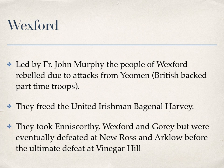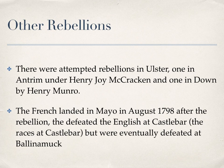The Wexford rebels were eventually defeated at Enniscorthy and New Ross before the ultimate defeat at Vinegar Hill. There were also two attempted rebellions in Ulster — one in Antrim under Henry Joy McCracken and one in Down under Henry Monroe — but both of these lasted only about ten days.